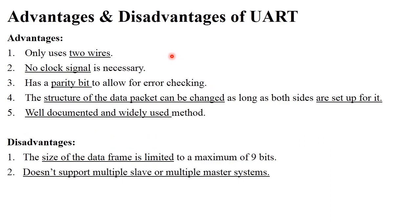Advantages and disadvantages of UART protocol. Advantages: it uses only two wires for transmission and reception; no clock signals are used; it uses parity bits to verify whether information was changed or accurately received; the structure of data packets can be changed (five to nine bits of data); and it is a well-documented and widely used method. Disadvantages: the size of the data frame is limited — you can send only a maximum of nine bits; and it does not support multiple slave or multiple master systems — it requires only one master and one slave.